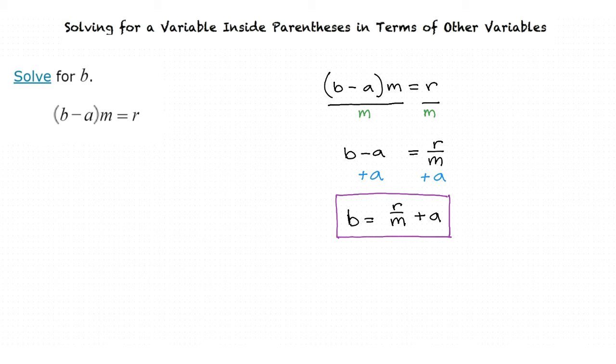So in order to get whatever variable we are solving for by itself, we first need to move everything that is outside the parentheses over to the other side of the equals sign. Once this is done, we can then get rid of the parentheses and move whatever was inside of them over to the other side as well, until we are left with just the variable that we are attempting to solve for. That's right. It looks like you've got it down.